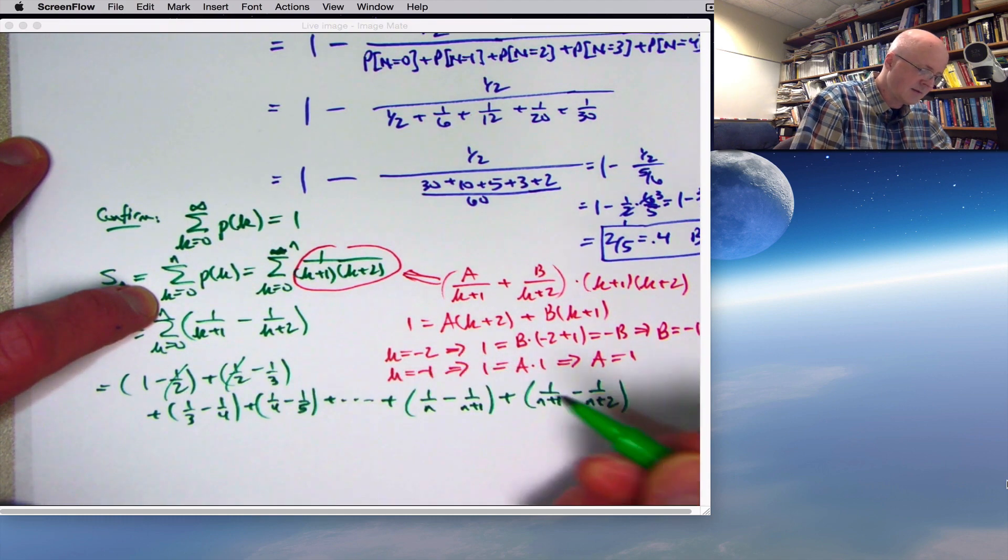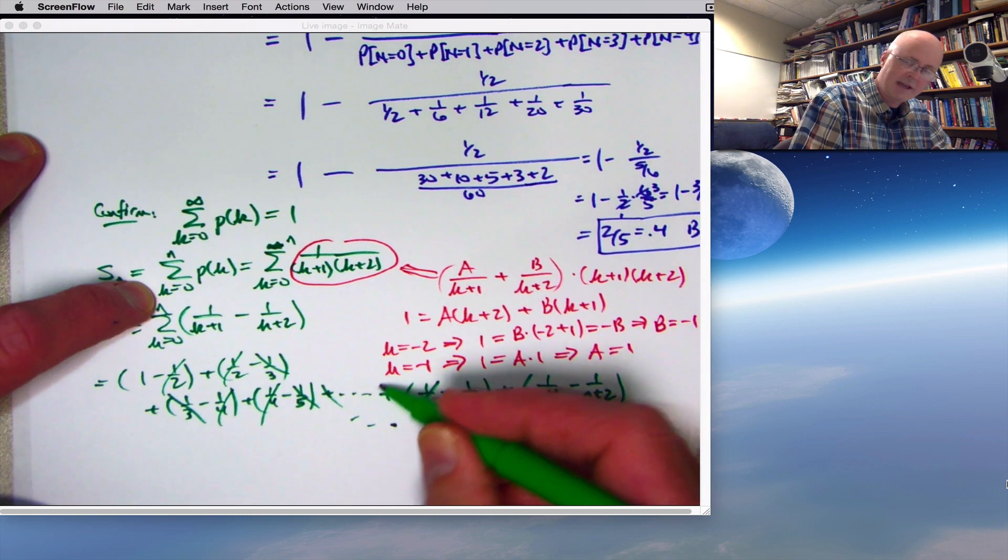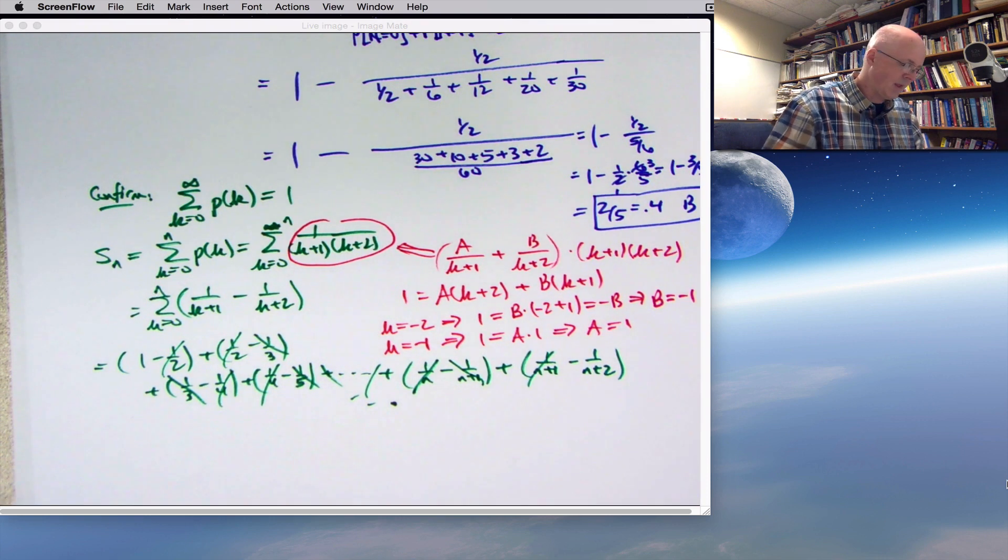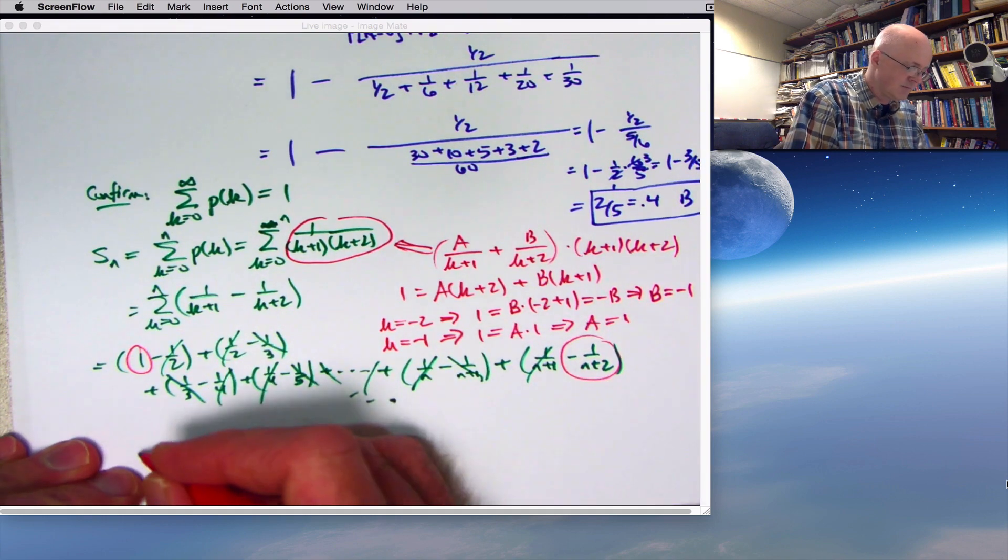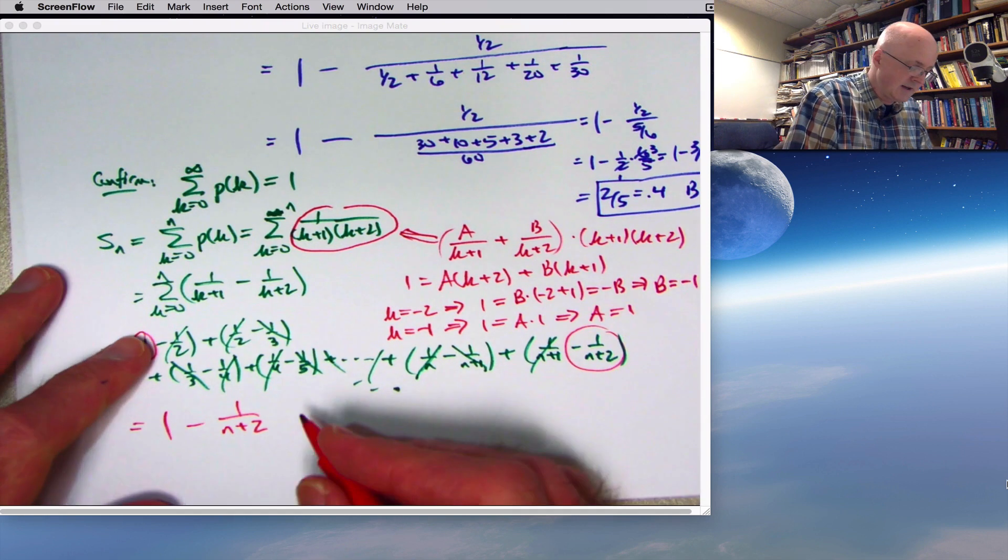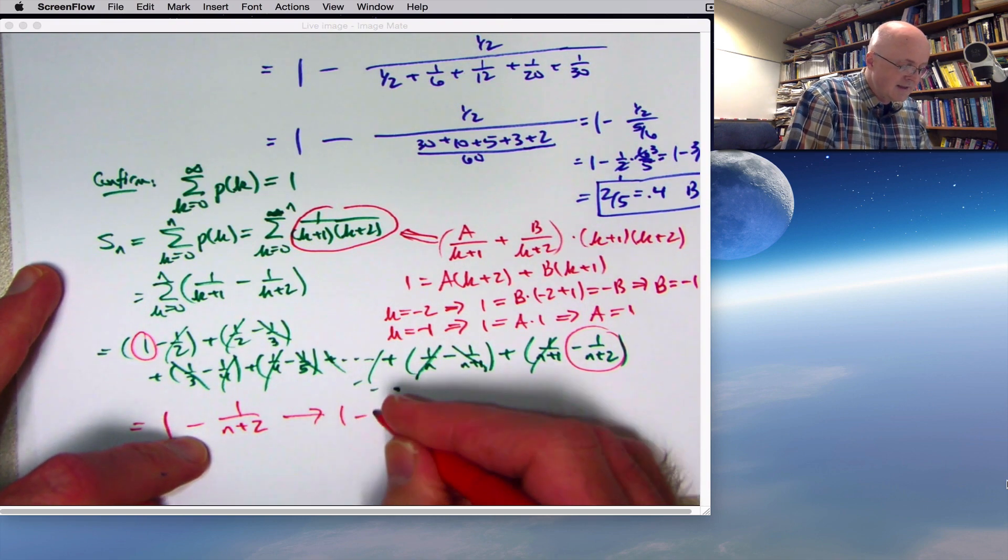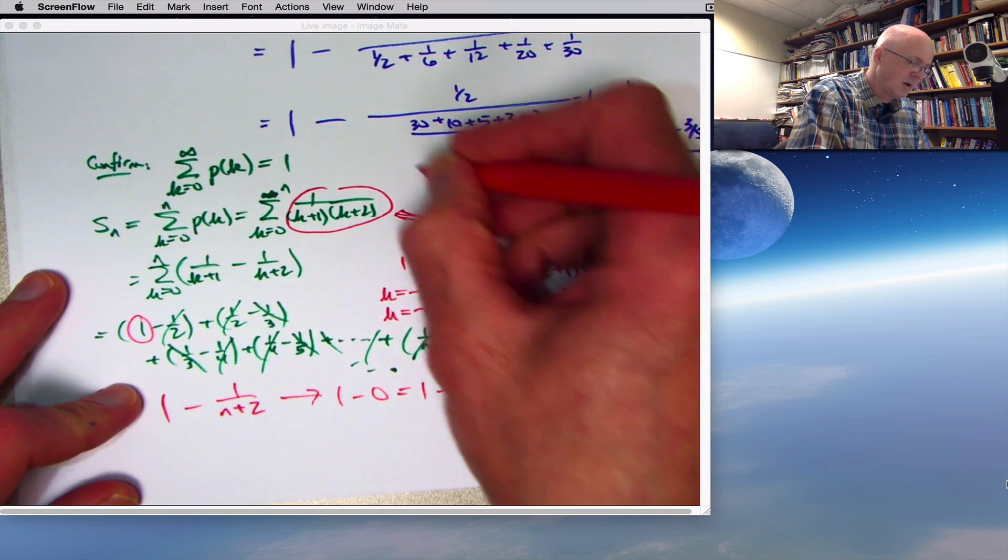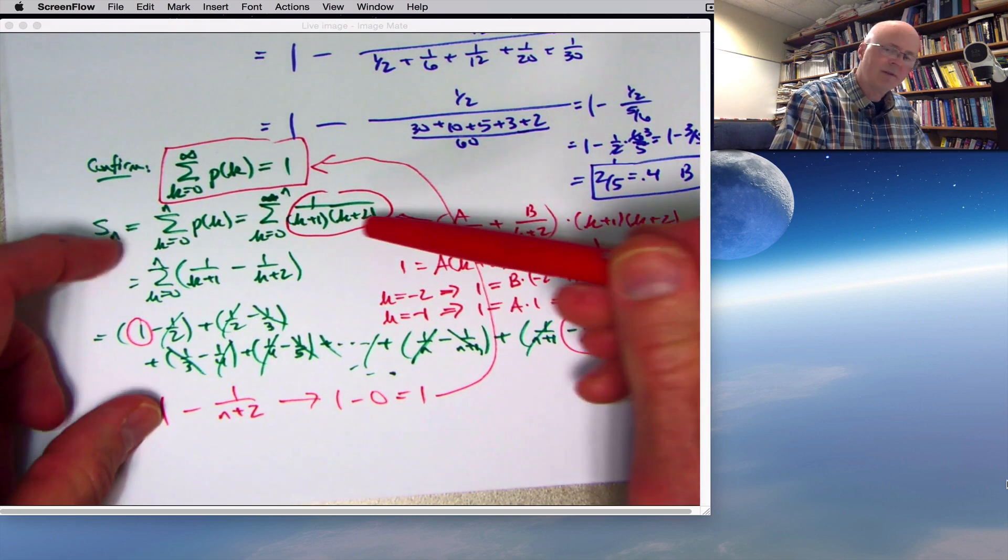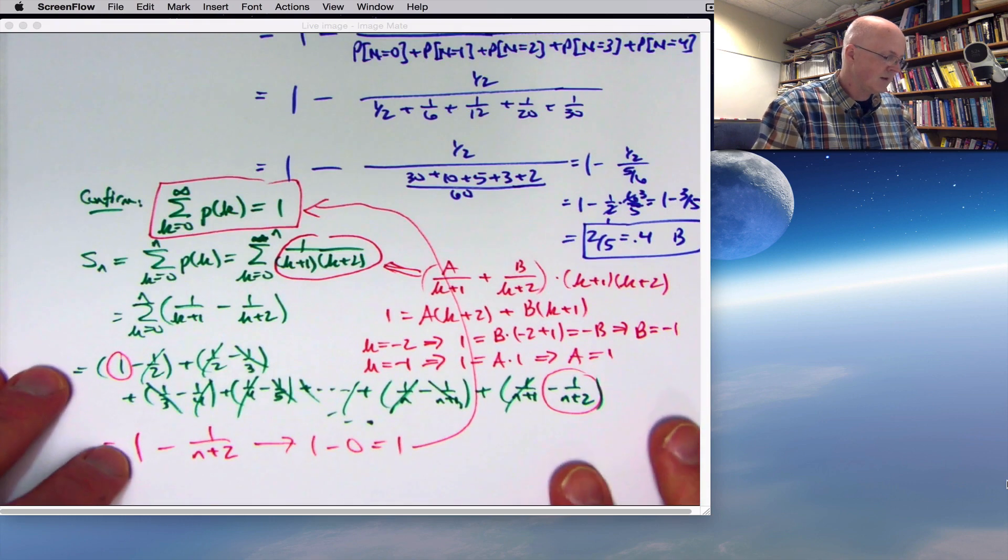The minus 1 half here cancels with this plus 1 half. The minus 1 third cancels with this plus 1 third, etc. Going on, this 1 over n would cancel with one that came before it. This minus 1 over n plus 1 cancels with the plus 1 over n plus 1. The only two things that haven't been canceled are the original 1 and the minus 1 over n plus 2. The partial sum simplifies to this thing. And now you'll let n go to infinity. Take the limit as n goes to infinity. As n goes to infinity, this fraction goes to 0. You've got a constant divided by something getting arbitrarily large. The fraction is going to go to 0. The limit is 1. And that means we have confirmed that the infinite sum equals 1.